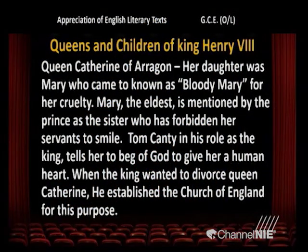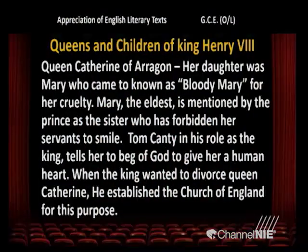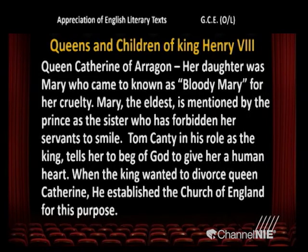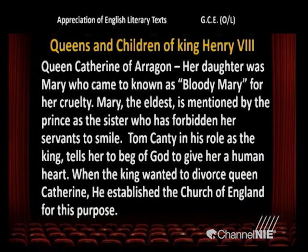The queens and children of King Henry VIII: Queen Catherine of Aragon — her daughter was Mary, who came to be known as Bloody Mary for her cruelty. Mary, the eldest, is mentioned by the prince as the sister who has forbidden her servants to smile. Tom Canty, in his role as king, tells her to beg God to give her a human heart. When the king wanted to divorce Queen Catherine, he established the Church of England for this purpose — a real historical event included in the story.